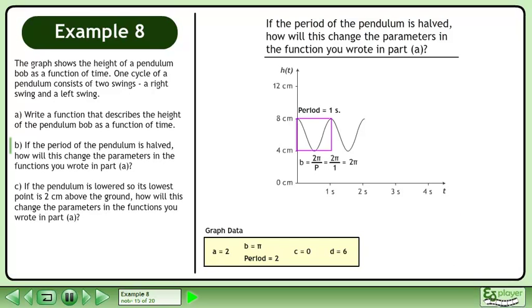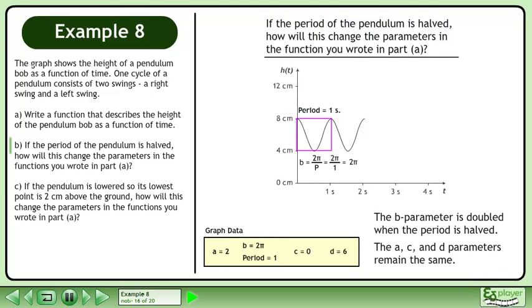The new b value is 2π. The b parameter is doubled when the period is halved. The a, c, and d parameters remain the same.